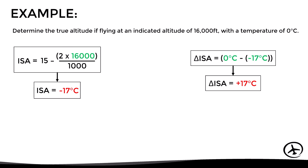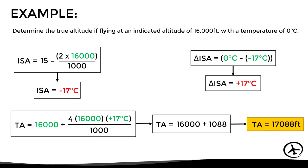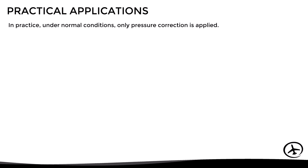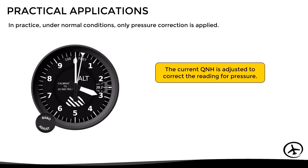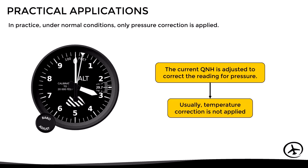With this information we can now apply the formula for true altitude. Replacing the terms and doing the math, we obtain a true altitude of 17,088 feet. Now, having seen the theory regarding these types of altitude, let's see their practical applications. Under normal conditions only pressure correction is applied — meaning the only thing done is adjusting the QNH on the altimeter. Therefore, temperature correction is not usually applied, and the altitude used in most operations is the indicated altitude rather than the true altitude.